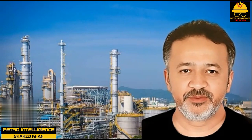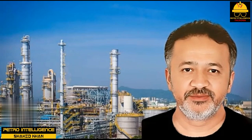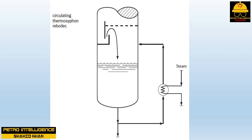Understanding the important differences between a once-through thermosyphon reboiler and a circulating thermosyphon reboiler is critical. In a circulating reboiler, the reboiler outlet temperature is always higher than the tower bottom temperature. Some of the liquid from the reboiler outlet will always recirculate back into the reboiler feed. Some liquid from the bottom tray drops into the bottoms product. The tower bottom product temperature and composition are the same as the temperature and composition of the feed to the reboiler.